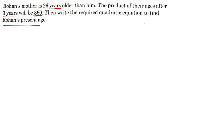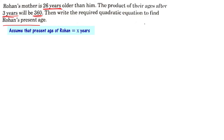To write the quadratic equation, let's use the given information. Rohan's mother is 26 years older than Rohan. If Rohan's current age is x, then Rohan's mother's current age is x plus 26. The product of their ages after three years will be 360. Let me assume that Rohan's present age is x years.